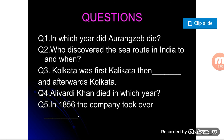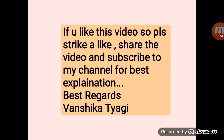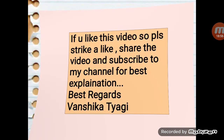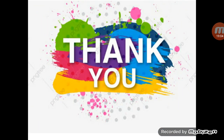Here are some review questions: In which year did Aurangzeb die? — 1707. Who discovered the sea route to India and when? — Vasco da Gama, the Portuguese explorer, in 1498. Kolkata was first Kalikata, then Kelkata, and afterwards Kolkata. In which year did Alivardi Khan die? In 1856 the company took over — fill in the blank. That's all for today; the chapter is complete. If you like the video, please like, share, and subscribe to the channel Knowledge World and press the bell button for notifications.